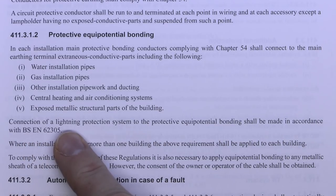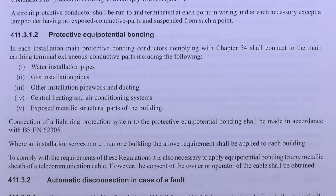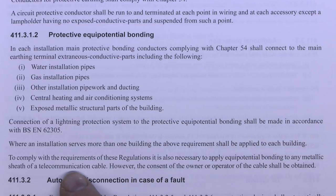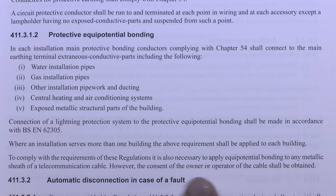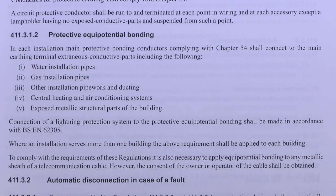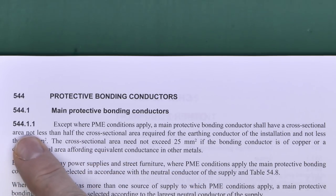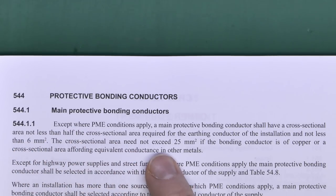There are a few notes: connection of a lightning protection system should be connected in accordance with the relevant standard, and when an installation serves more than one building these requirements should be applied to each building. There's also a note about the metallic sheath of a telecoms cable — typically an underground armoured cable — which should be connected, but the consent of the operator/owner of the cable should be obtained. The section dealing with the size of main protective bonding conductors is 544, part of chapter 54 which covers all protective conductors.